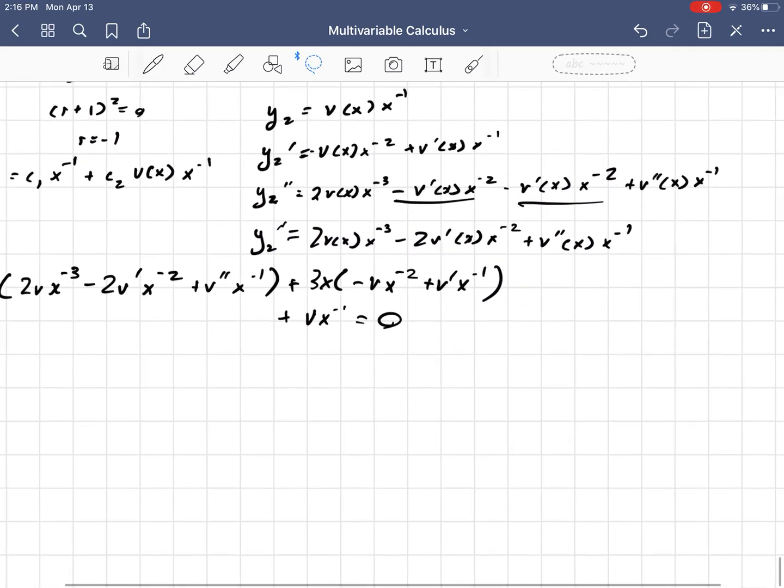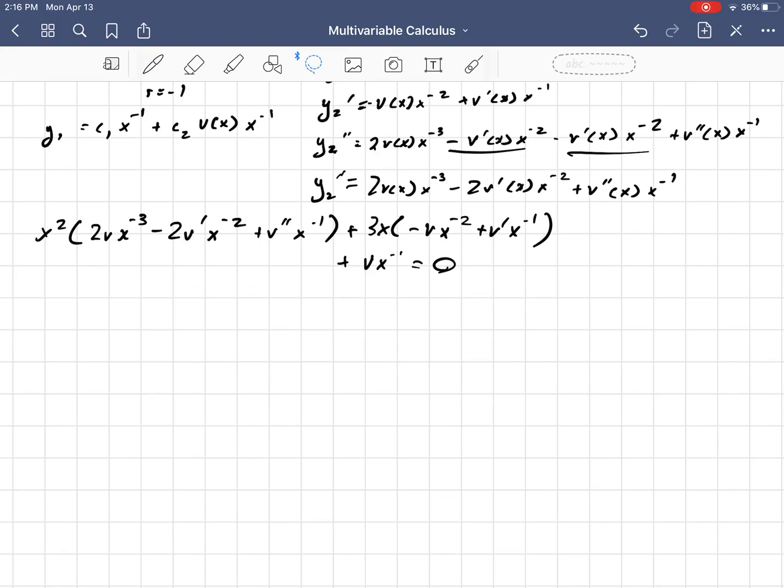And so now when I foil out, I get 2vx⁻¹ - 2v' + v''x, plus, or now it's a minus, -3vx⁻¹, all right, plus 3v'.